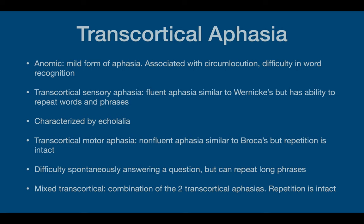Transcortical motor aphasia is a non-fluent aphasia similar to Broca's, but repetition is intact, strangely enough. The patient is frustrated because they understand the language, but you don't understand them. In trying to communicate, they will repeat what you say but might use different emphasis on different words. There's difficulty in spontaneously answering a question, but they can repeat long phrases. Mixed transcortical aphasia is a combination of the two transcortical aphasias, and once again repetition is intact.